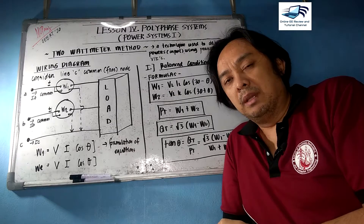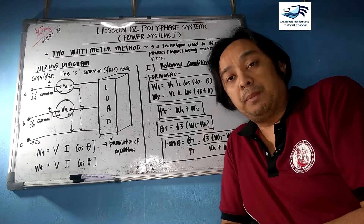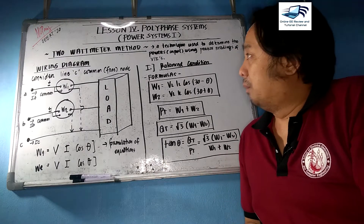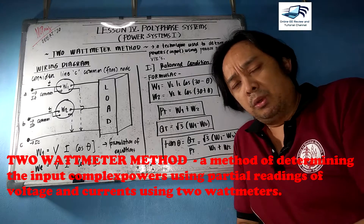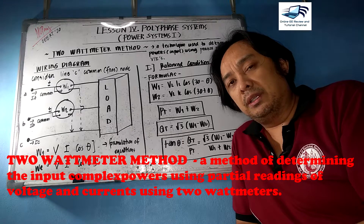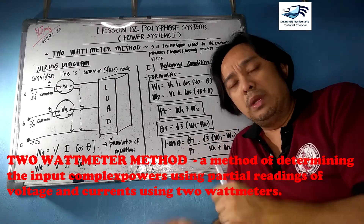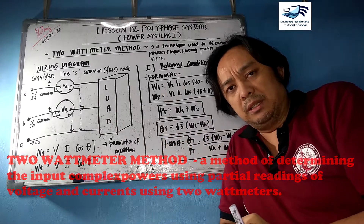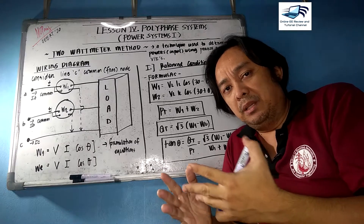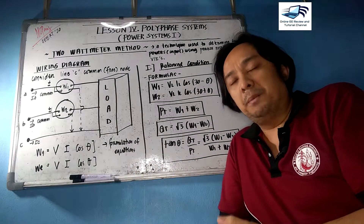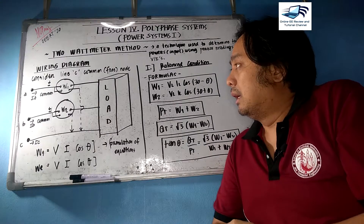The formulas are predetermined, and their derivations will be covered in a separate video. A 2 wattmeter method is a technique used for power measurement using partial readings of voltage and current on two lines, with one line as reference. We can still compute for complex power S, where S equals real power plus or minus j times reactive power.